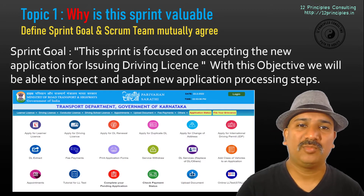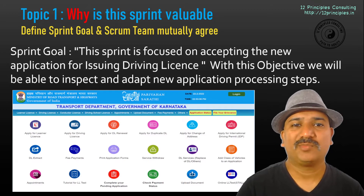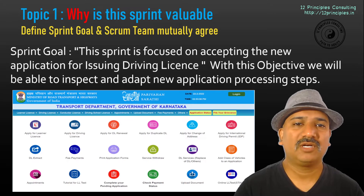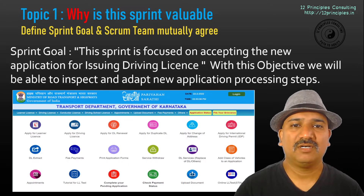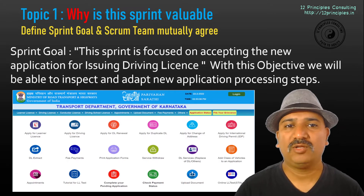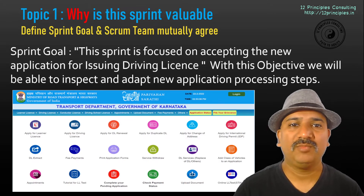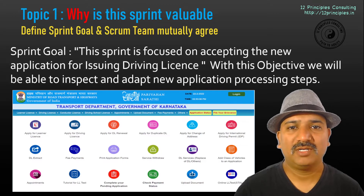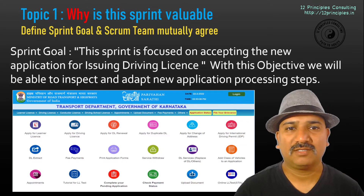Who takes the accountability of doing it? The Product Owner. The Product Owner comes up with an idea as to what is valuable to the team and the product during the Sprint, and they focus on that.